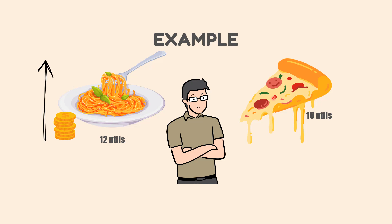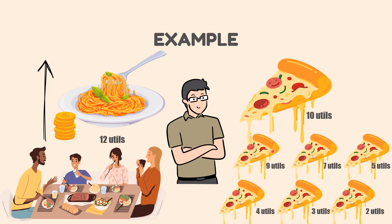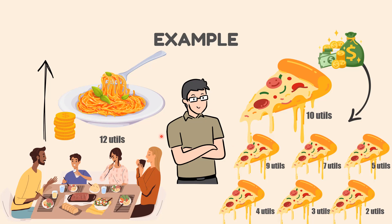Additionally, utils can decrease as the number of products or services consumed increases. The first slice of pizza may yield 10 utils, but as more pizza is consumed, the utils may decrease as people become full. This process will help consumers understand how to maximize their utility by allocating their money between multiple types of goods and services, as well as help companies understand how to structure tiered pricing.